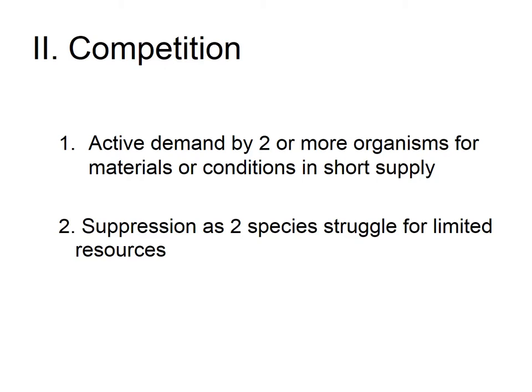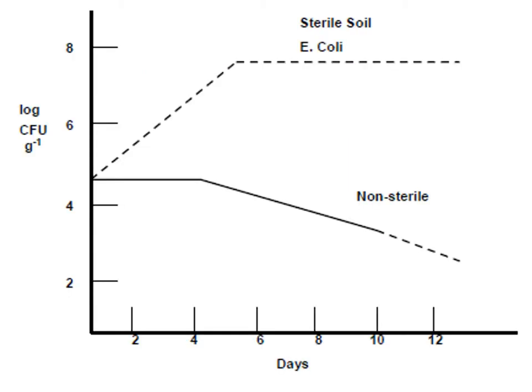For competition to occur, two conditions are required: first, two or more organisms must be present in the same location; second, they must be competing for a condition or material that is in short supply. The effect is suppression — both species suffer from having that resource limited, resulting in a negative-negative interaction for two or more organisms.